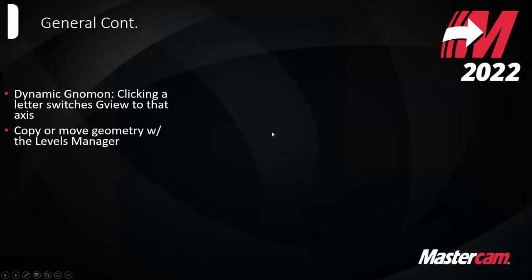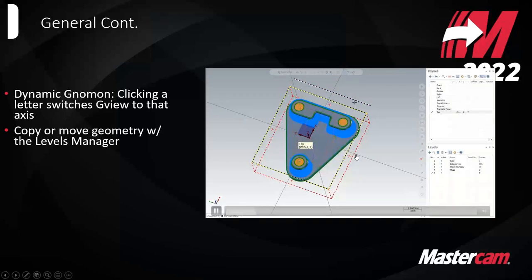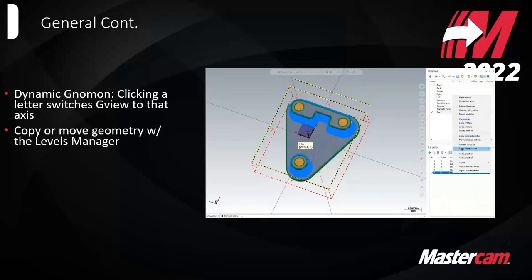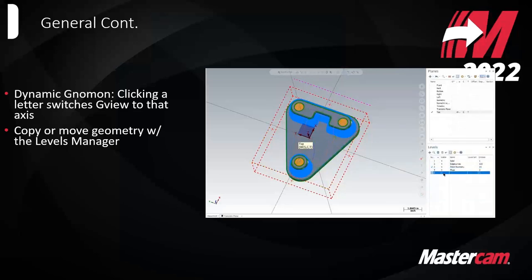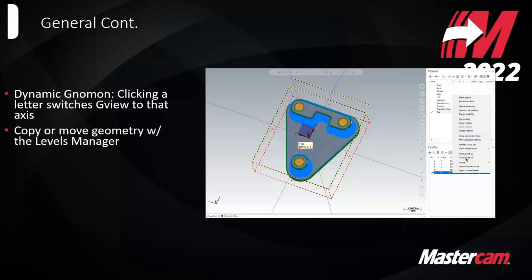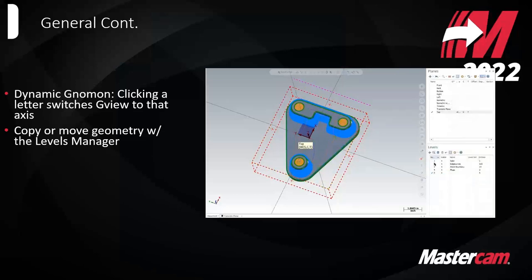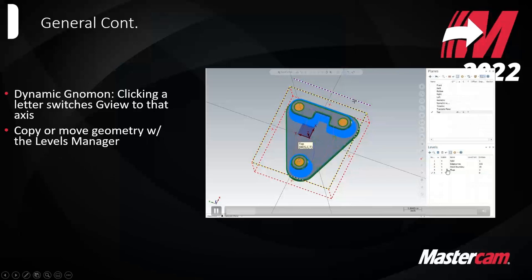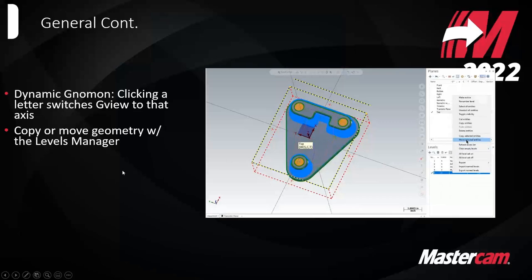You can copy and move geometry with the levels manager now. Before you could get close to this functionality by right-clicking in the graphics area and doing move level, but all these small improvements are really about reducing mouse clicks and mouse movement. So when you're doing a lot of this throughout the day, instead of moving all the way to the left side of the screen on a big monitor, you can just right-click in the levels manager and copy or move geometry between levels.